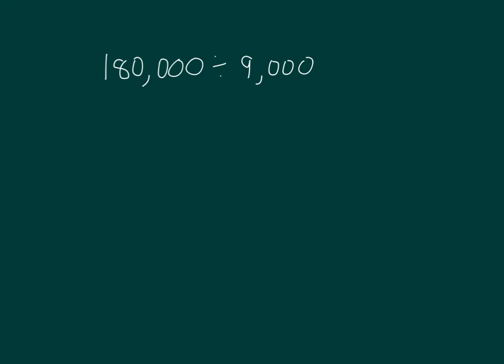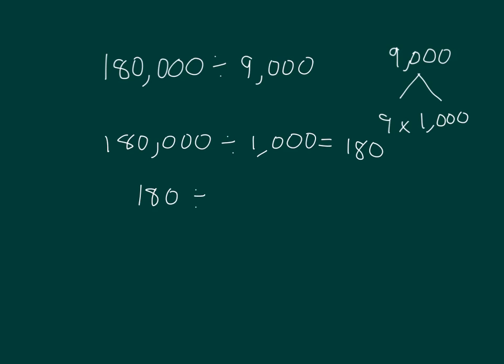Here we have one more problem. We have 180,000 divided by 9,000. How can we break apart 9,000? We can decompose 9,000 into 1,000 times 9. So in this case, we divide 180,000 by 1,000 first, where we get 180. And then are we done? No, we still have to divide by 9. So we take 180 and divide it by 9. 9 goes into 180 20 times.